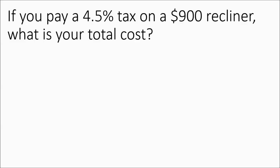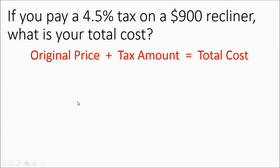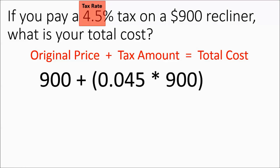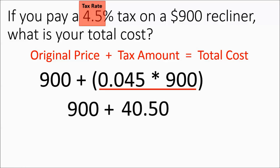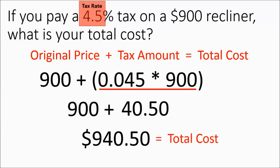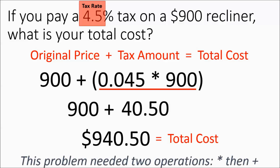If you pay a 4.5% tax on a $900 recliner, what is your total cost? This total cost is going to be two operations — you're going to do your multiplying, then adding. We're going to take our original price and add the tax amount. We figure out that tax amount by multiplying 4.5% times 900, which is 0.045 times 900 — make sure you move the decimal two places to the left. Multiply it out, then add to the 900. So this recliner is going to cost you $940.50. Once again, this was a two-operation problem: multiply, then add.